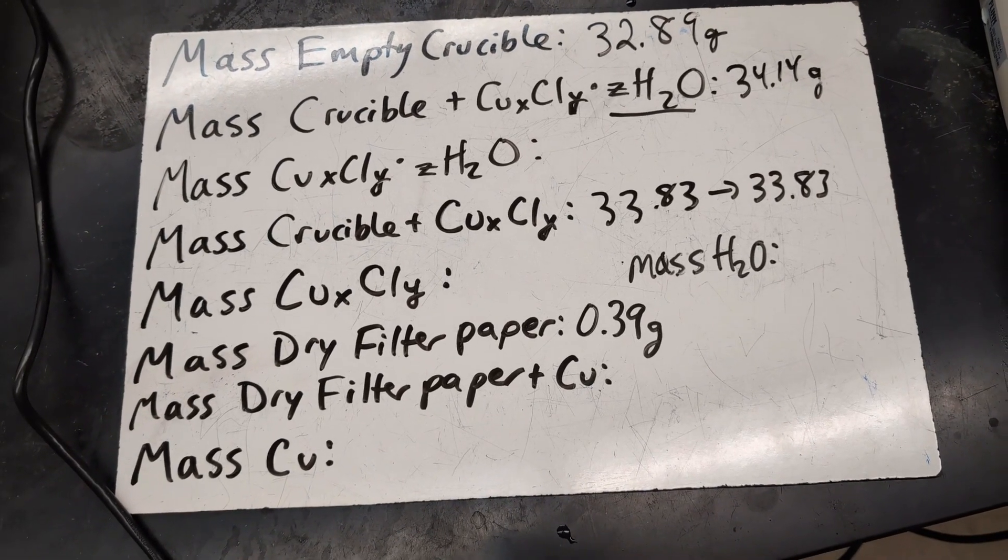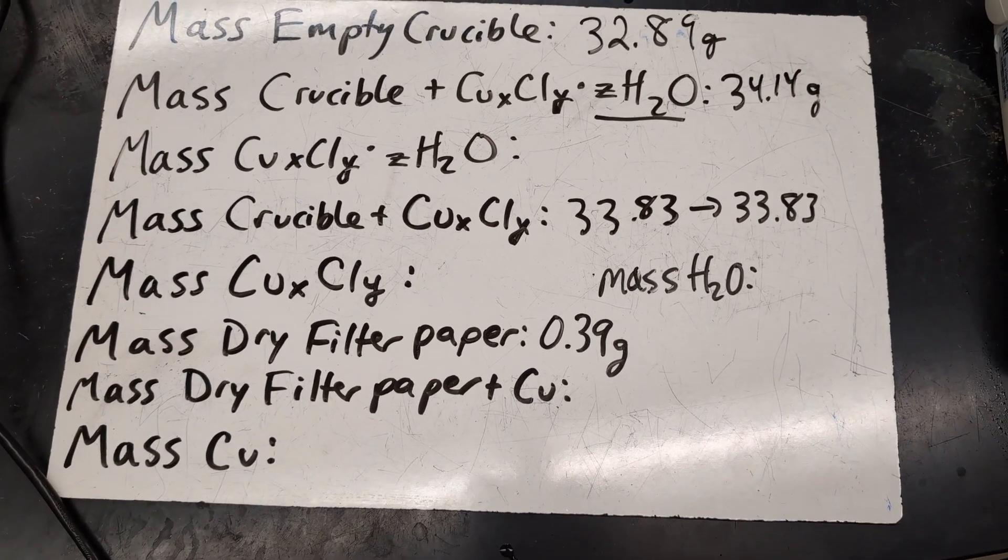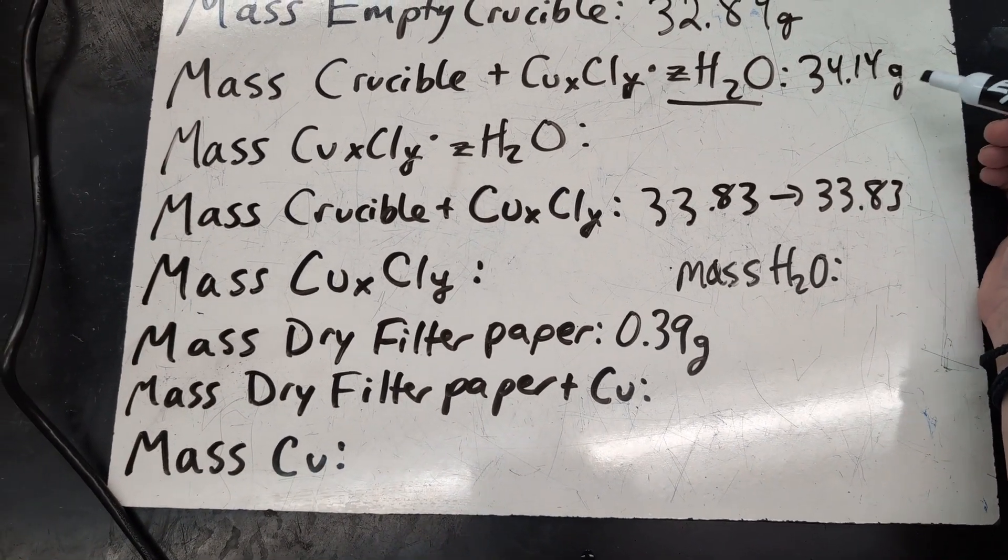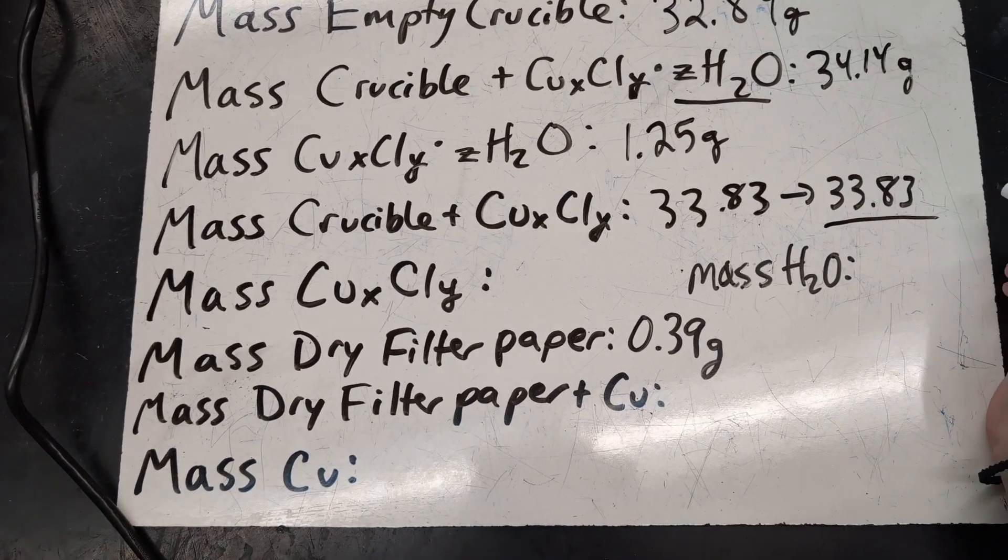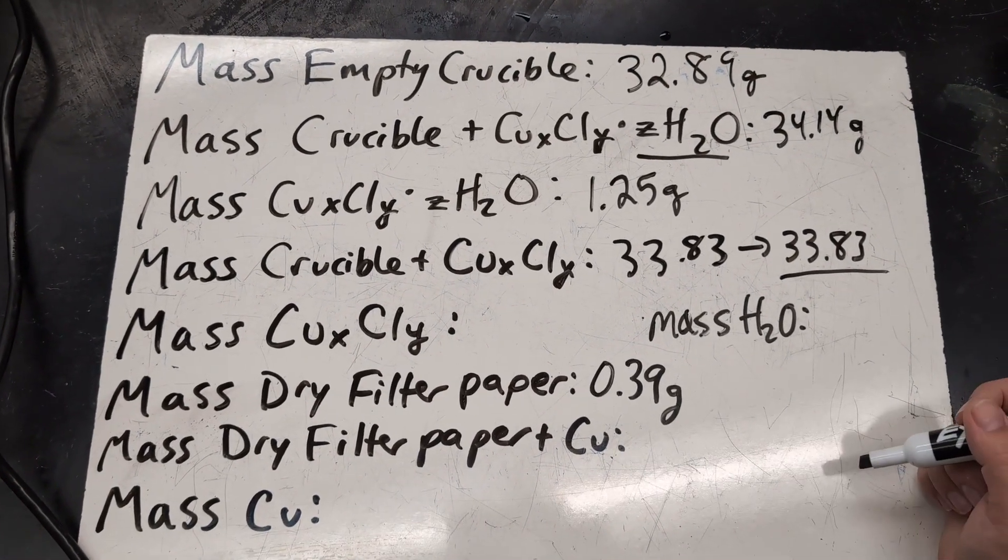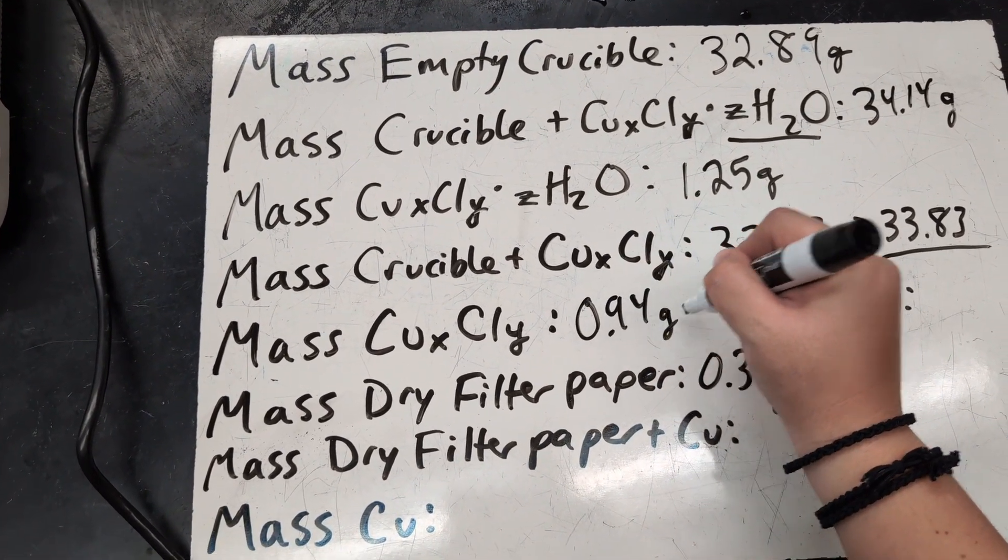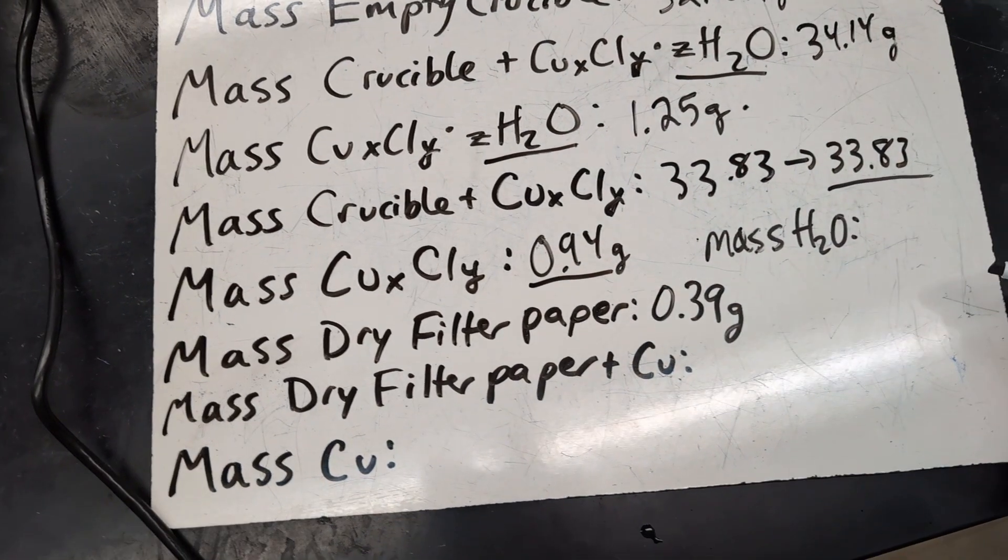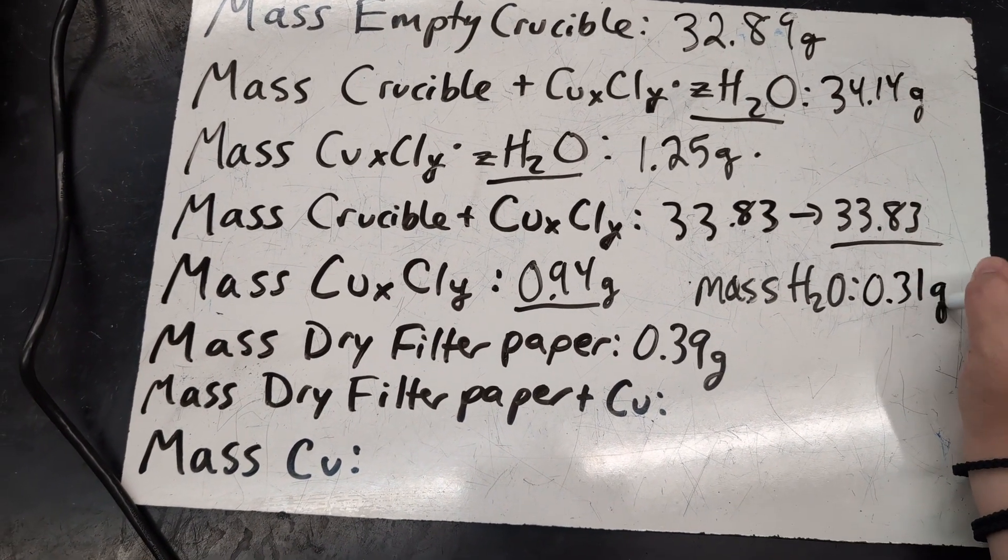So while your filter paper with the solid copper is drying, I think that this is a great time to have students clean up. But also, you can have them start doing some calculations. So you can do the empty crucible and the crucible with the hydrate. If you subtract those, you'll get just the mass of the hydrate. When you subtract here, you get 1.25 grams of hydrate. Then you always want to use your final mass after dehydrating. Ours happened to be the same. I just got lucky that time, but you always want to make sure that you reach a constant mass at the end and subtract out the empty crucible to get the mass of the anhydrous compound, which was 0.94 grams this time. Then we can go ahead and subtract. We have our hydrate with the water minus the anhydrous substance to find just the mass of water that evaporated. So the 1.25 minus 0.94, you get 0.31 grams of water that evaporated.